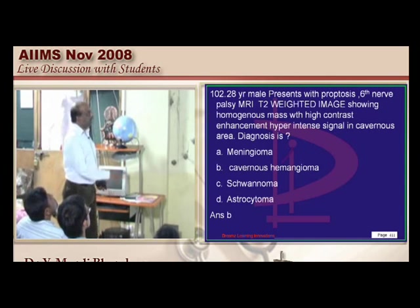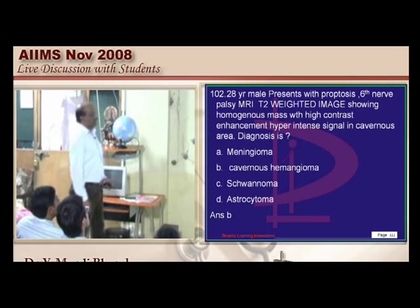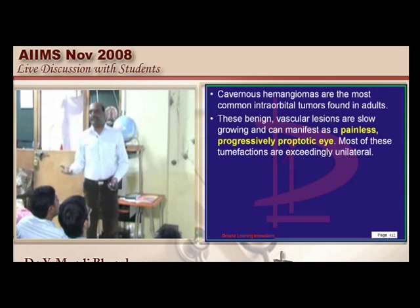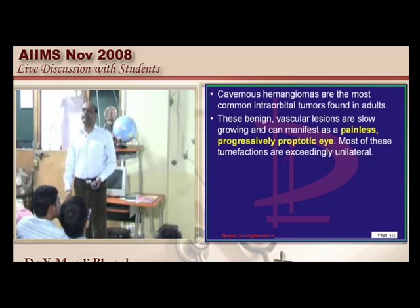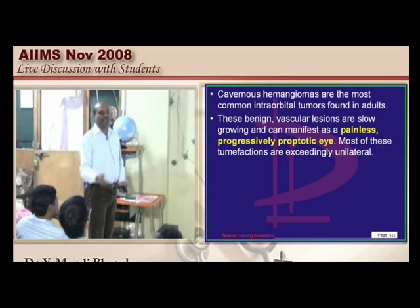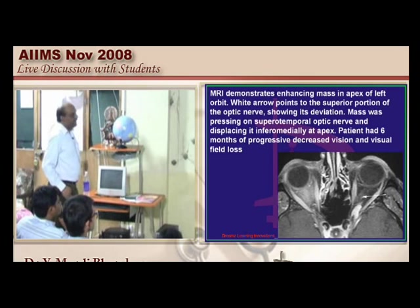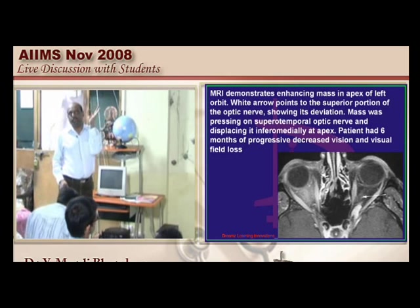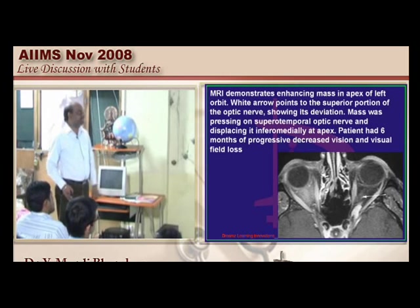A 28-year-old with 6th nerve palsy: a T2-weighted image shows a homogeneous mass in the cavernous sinus. If it is in the cavernous area, it should be a cavernous hemangioma. On MRA you can clearly see accentuation of the signal of the cavernous hemangioma, and along the wall of the cavernous sinus the abducens nerve undergoes paralysis.